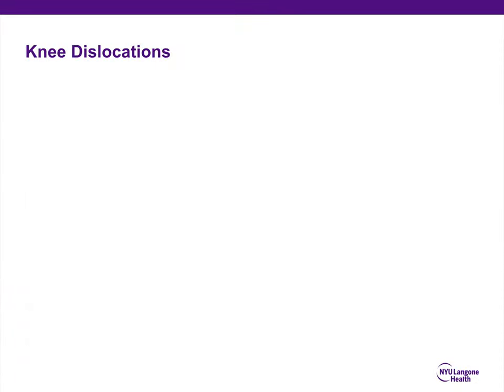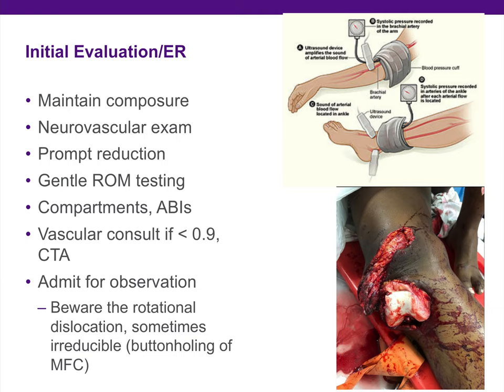We're going to start with knee dislocations. These injuries are very high-energy injuries and potentially limb-threatening. When you're in the emergency room or evaluating these patients for the first time, a key is to maintain your composure. A neurovascular exam prior to reduction followed by a prompt reduction — getting that tibiofemoral joint aligned immediately — is very critical for the vascular supply of the knee. Range of motion testing should be done very gently afterwards; you don't need to go bending the knee to 130 degrees or doing significant varus or valgus.